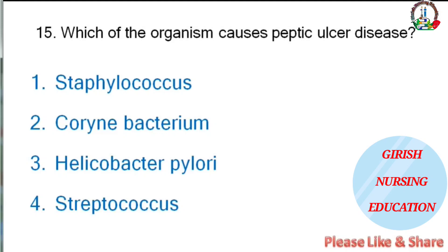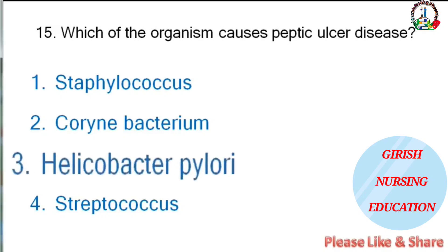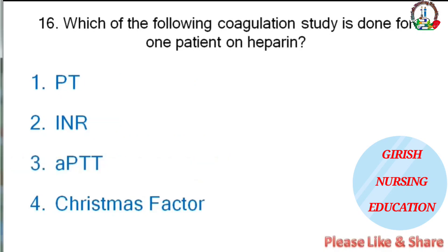Which organism causes peptic ulcer disease — Staphylococcus, Corynebacterium, Helicobacter pylori, or Streptococcus? The correct answer is Helicobacter pylori.